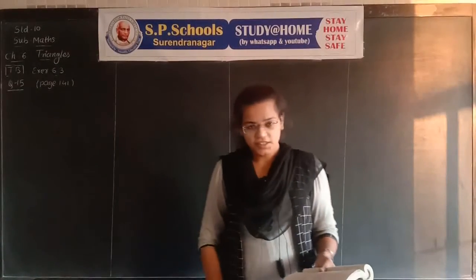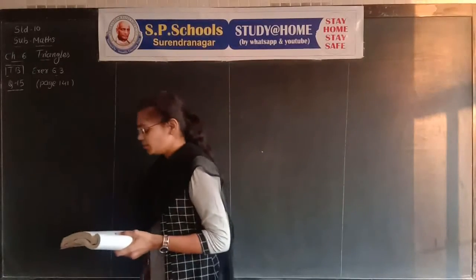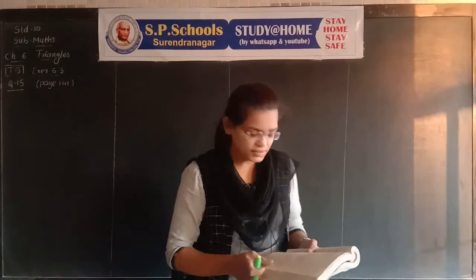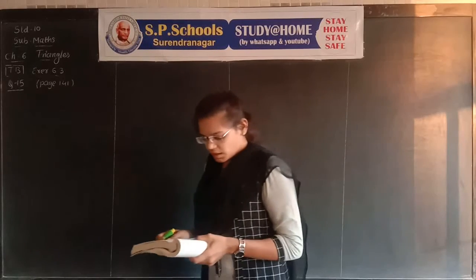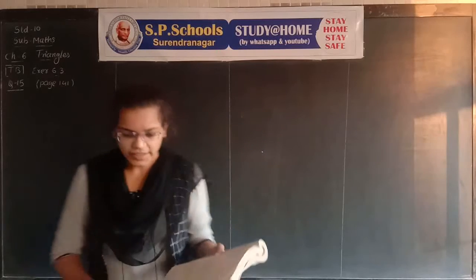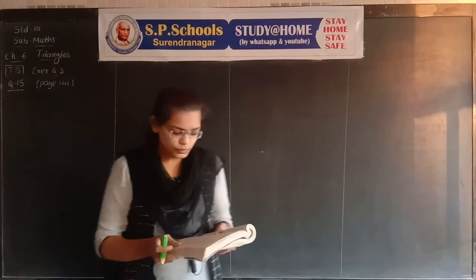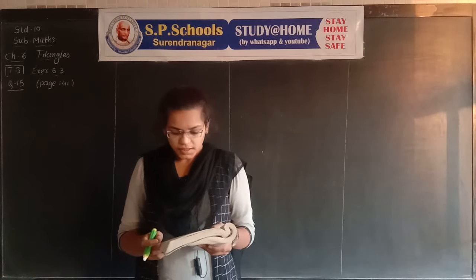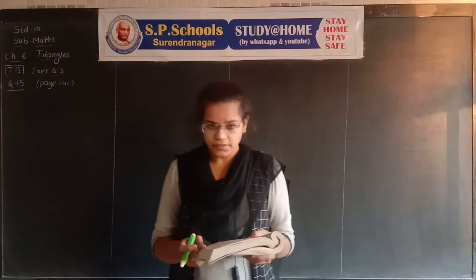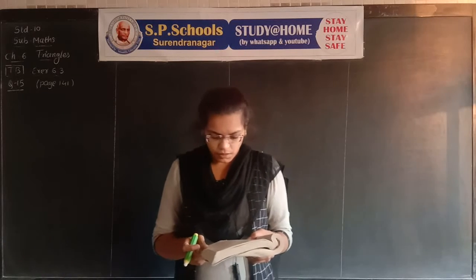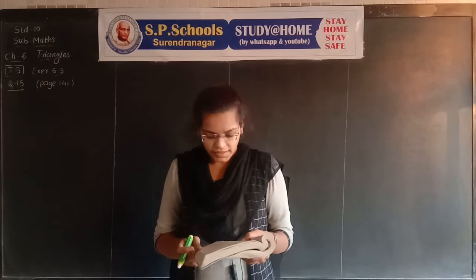In the last session, question number 14 from exercise 6.3 was completed. Now we discuss question number 15 from exercise 6.3. See the question in your textbook on page number 141: a vertical pole of length 6 meters casts a shadow 4 meters long on the ground, and at the same time a tower casts a shadow 28 meters long. Find the height of the tower.